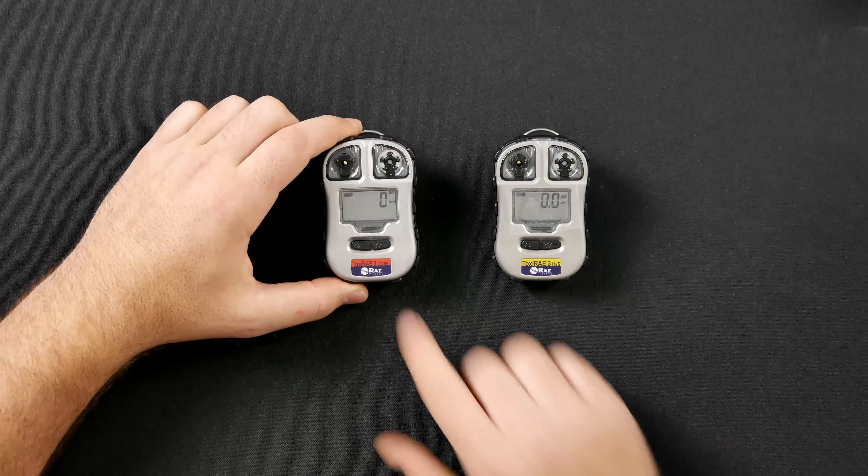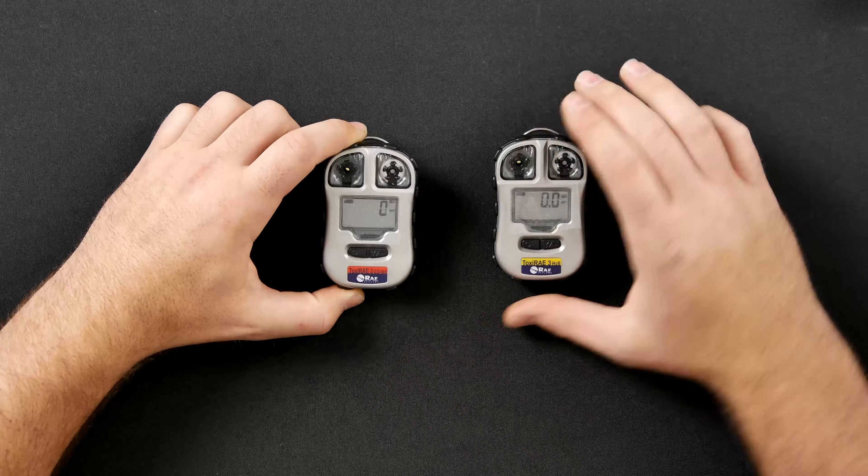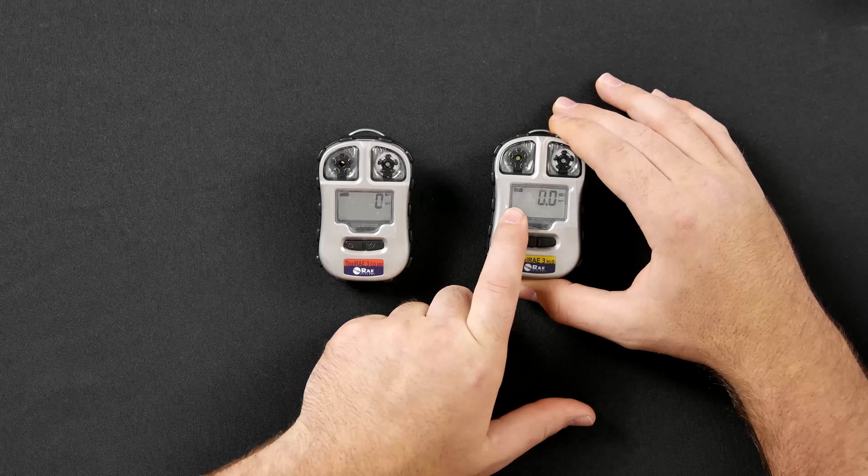You'll then go through a 60-second fresh air calibration. After its warm-up period, it will come to live reading mode. It will have your battery indicator in the top left-hand corner. If it may need to be calibrated, it will alarm and have a little CAL indicator underneath the battery.